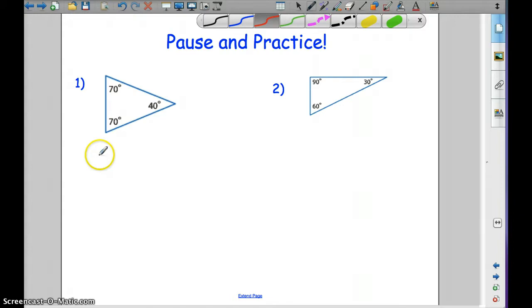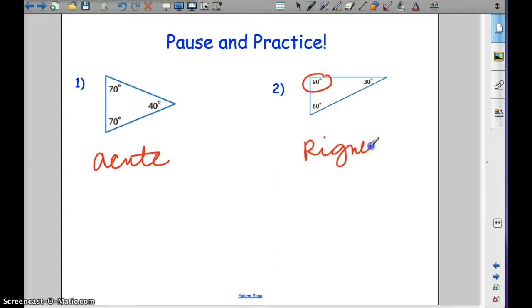The first one has three acute angles, so it is an acute triangle. Number two has a right angle at 90 degrees, so this is a right triangle.